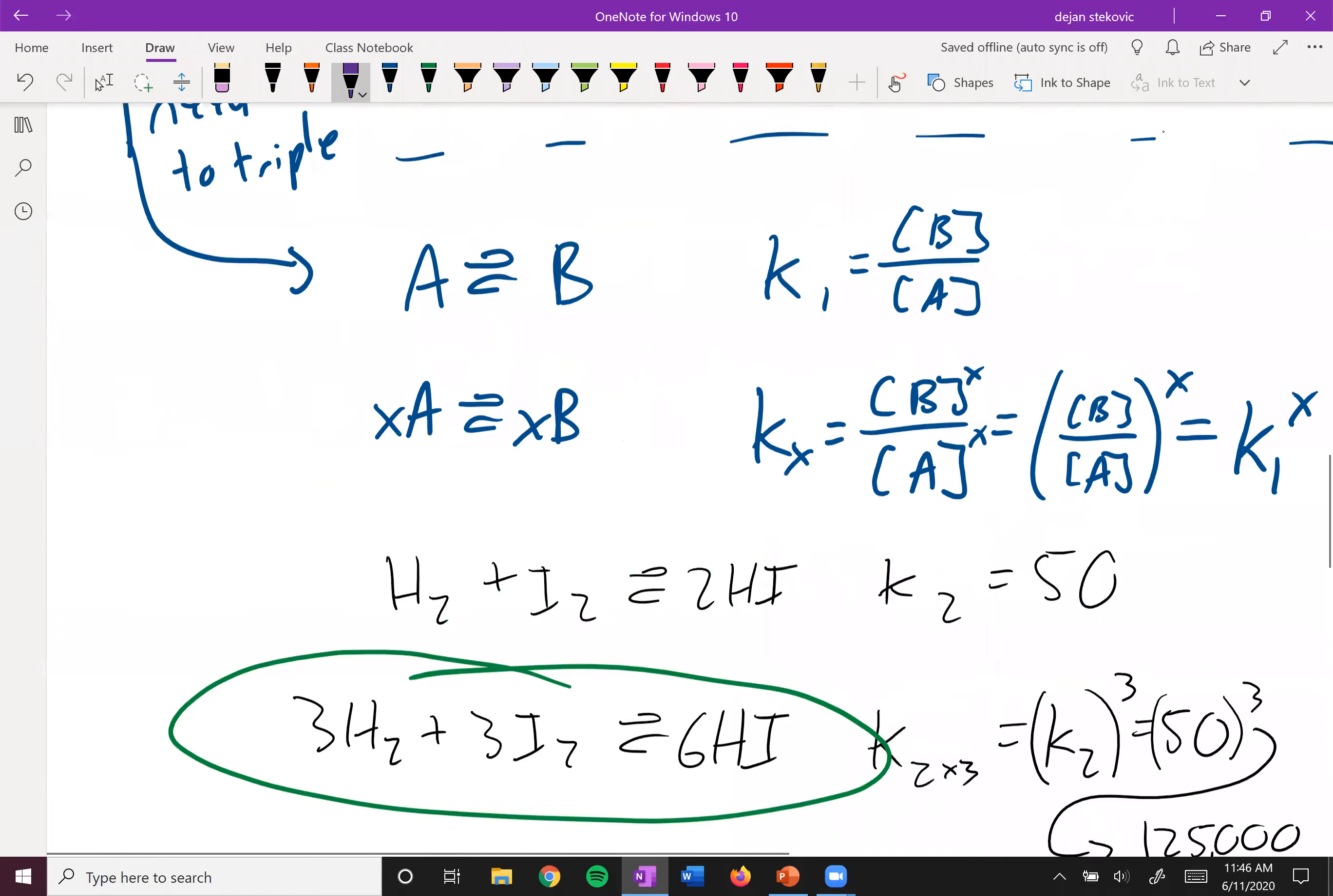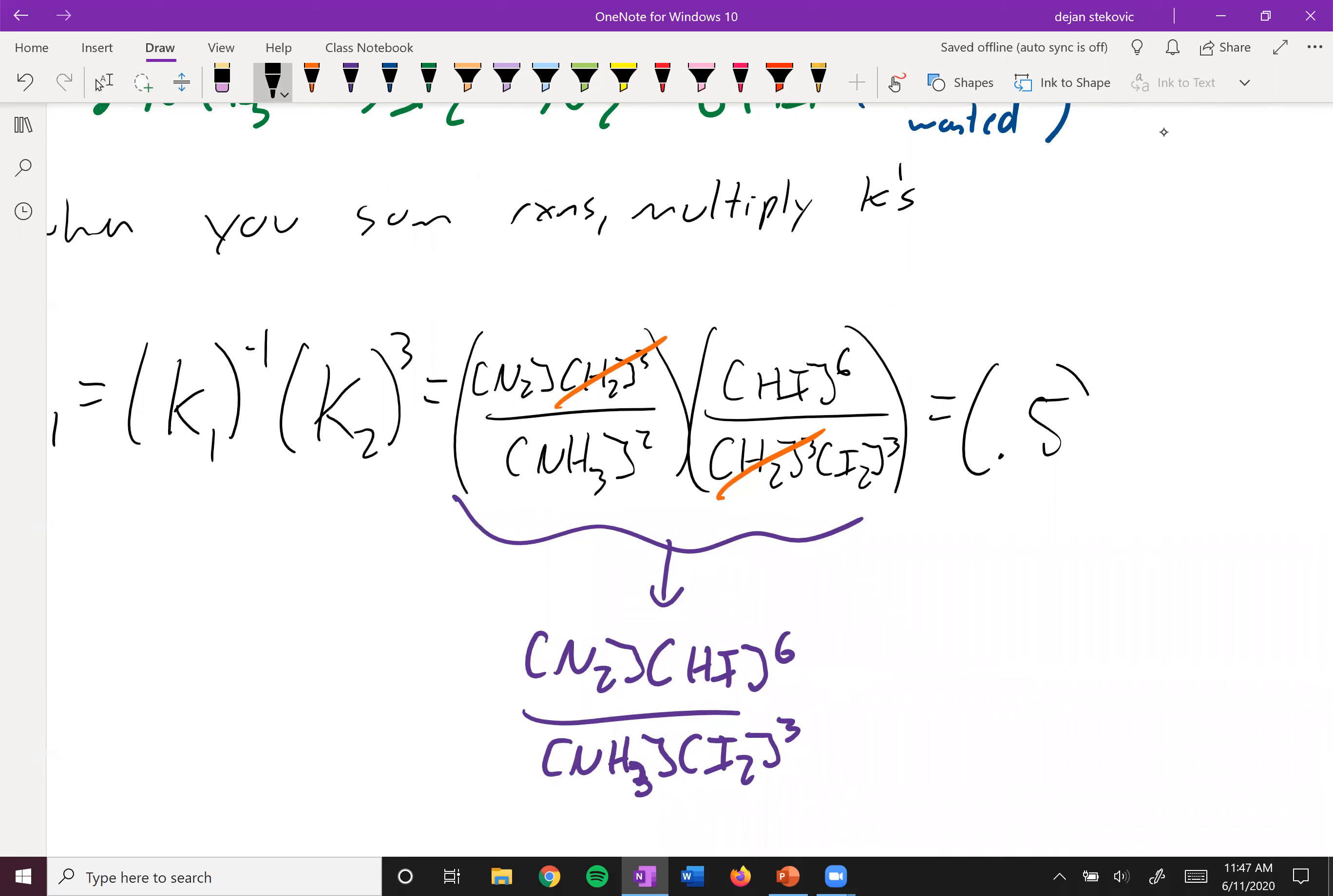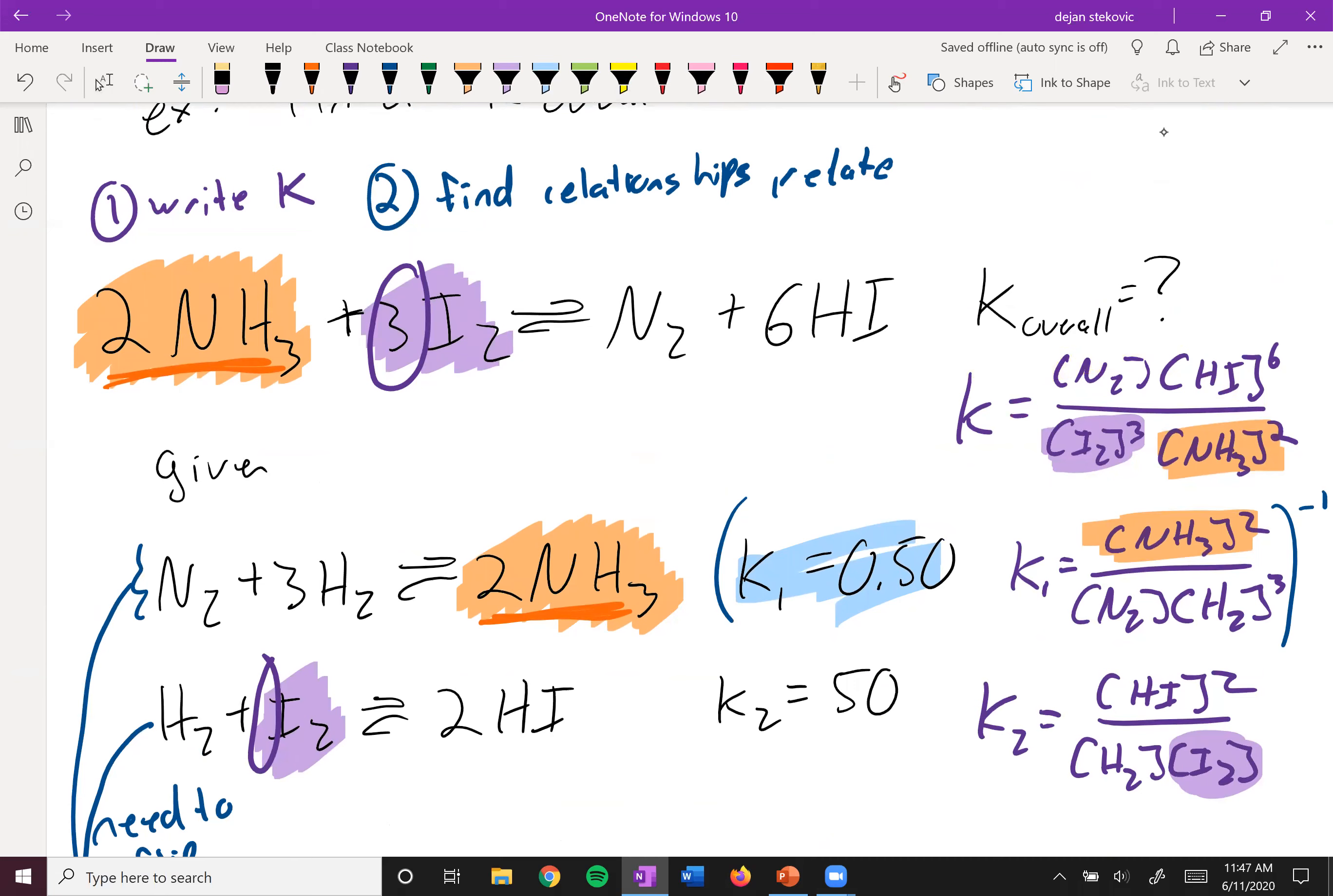And then if we go back up top, this is exactly what we wanted. This is exactly what we wanted. And so then we can just take these numerical values that we got. So the K1 was 0.5. So we have 0.5 to the negative one. And then this one was 50, and it was cubed. And then if you go ahead and do the math, you get 2.5 times 10 to the fifth, which is overall a quite a large K. And so even though these two Ks weren't that big, the K overall is quite huge. And remember, big K means that we favor our products. And so you'll get a lot of products from this reaction.